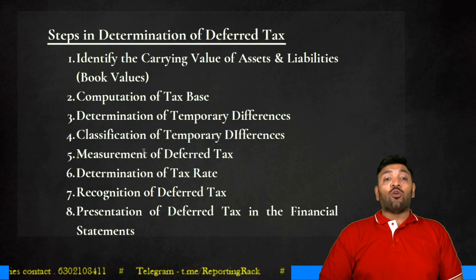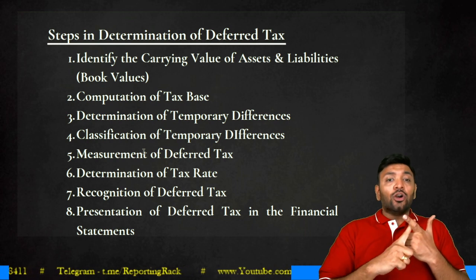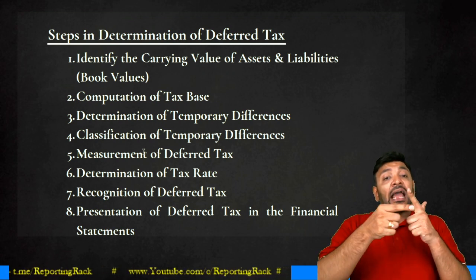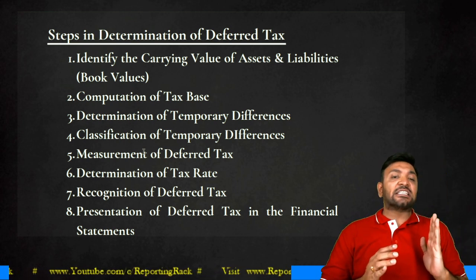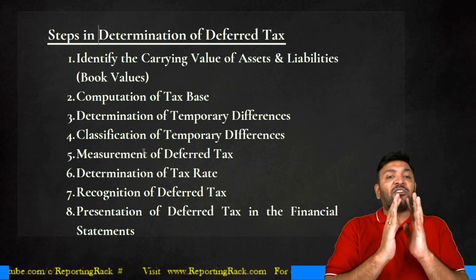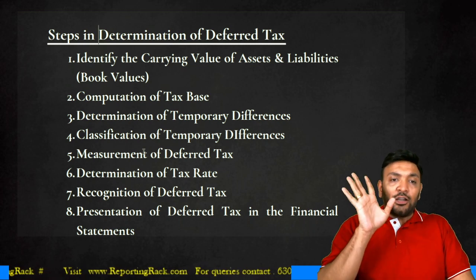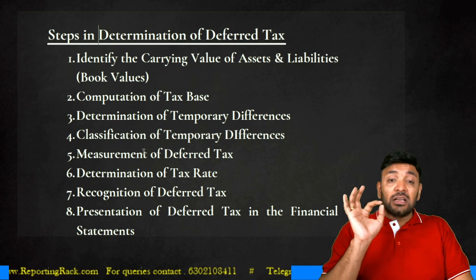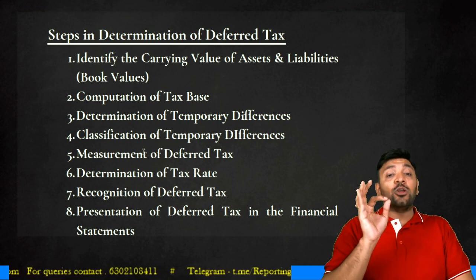Step 1: identify the carrying value of assets and liabilities. Step 2: calculate the tax base of these items. Step 3: the difference between carrying value and tax base is called a temporary difference. Step 4: classify the temporary differences as taxable temporary differences or deductible temporary differences. Step 5: measure the amount of deferred tax. Step 6: determine the tax rate. Then Step 7 and 8: recognition and presentation of deferred tax in financial statements.